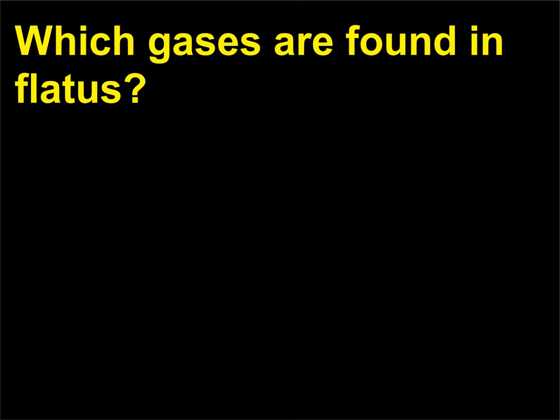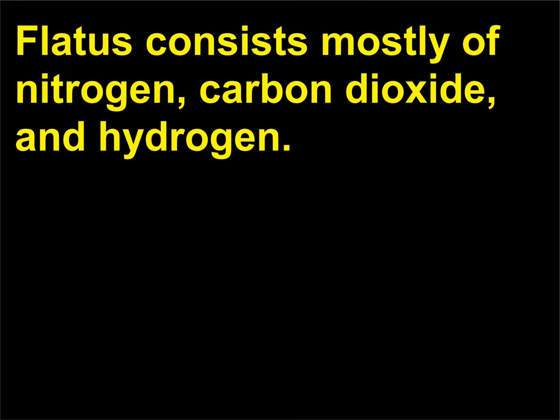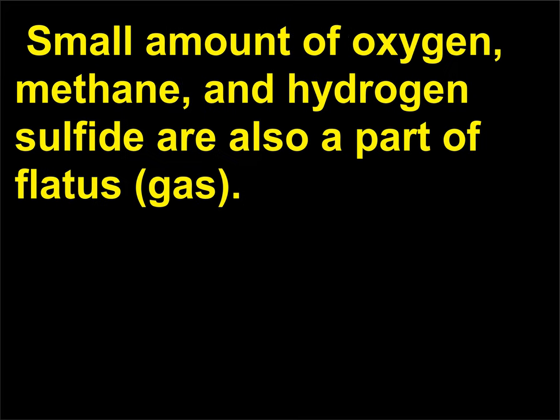Which gases are found in flatus? Flatus consists mostly of nitrogen, carbon dioxide, and hydrogen. Small amounts of oxygen, methane, and hydrogen sulfide are also part of flatus gas.